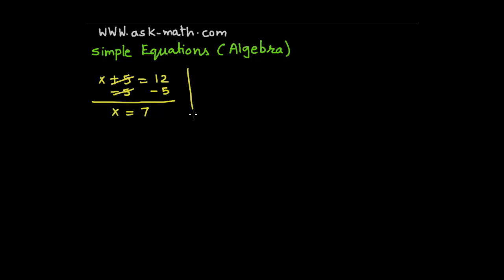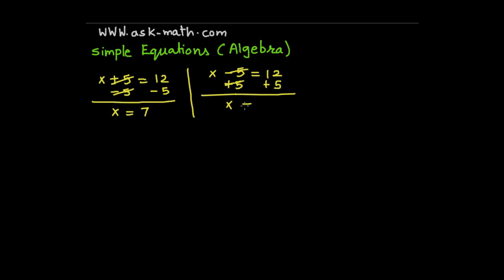Now suppose I am taking another example as x minus 5 is equal to 12. Since we have here negative 5, add plus 5 on both sides. So x is equal to 17.